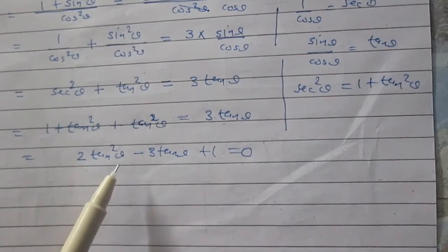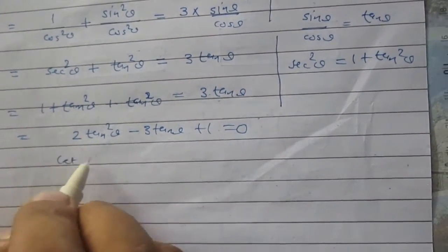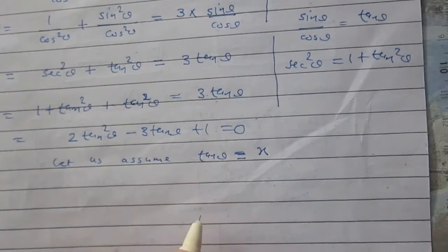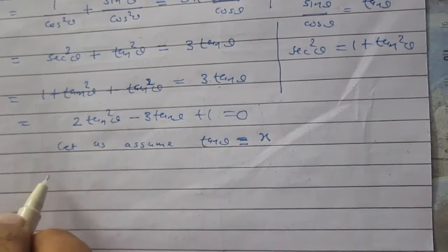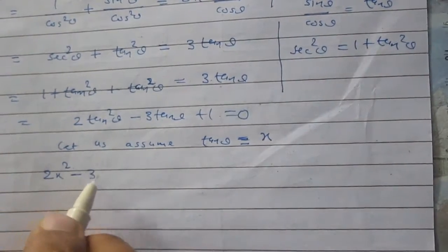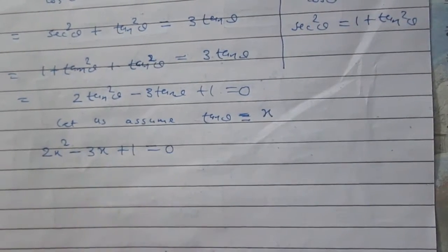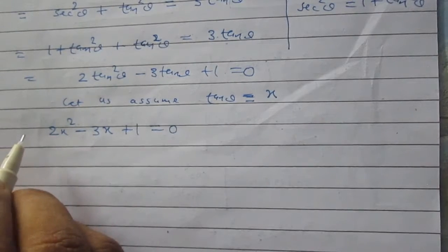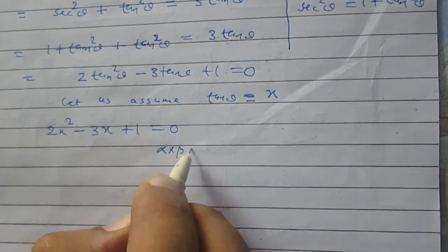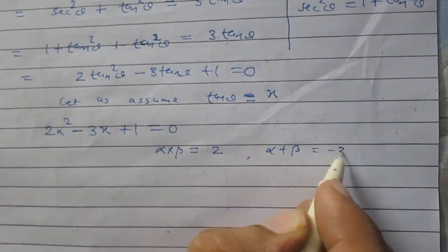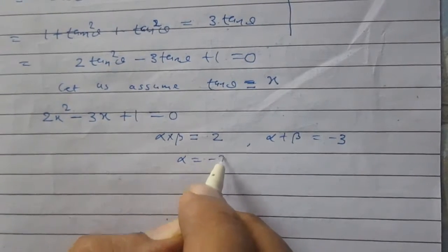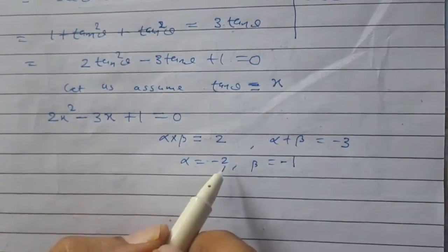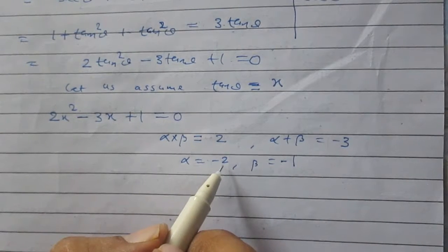This is a quadratic equation in tan theta. Let us assume tan theta as x, so the quadratic equation is reduced to 2x squared minus 3x plus 1 equals 0. We can factorize this using the middle term splitting method. We want two numbers whose multiplication is 2 and whose addition is minus 3. Those two numbers are minus 2 and minus 1.